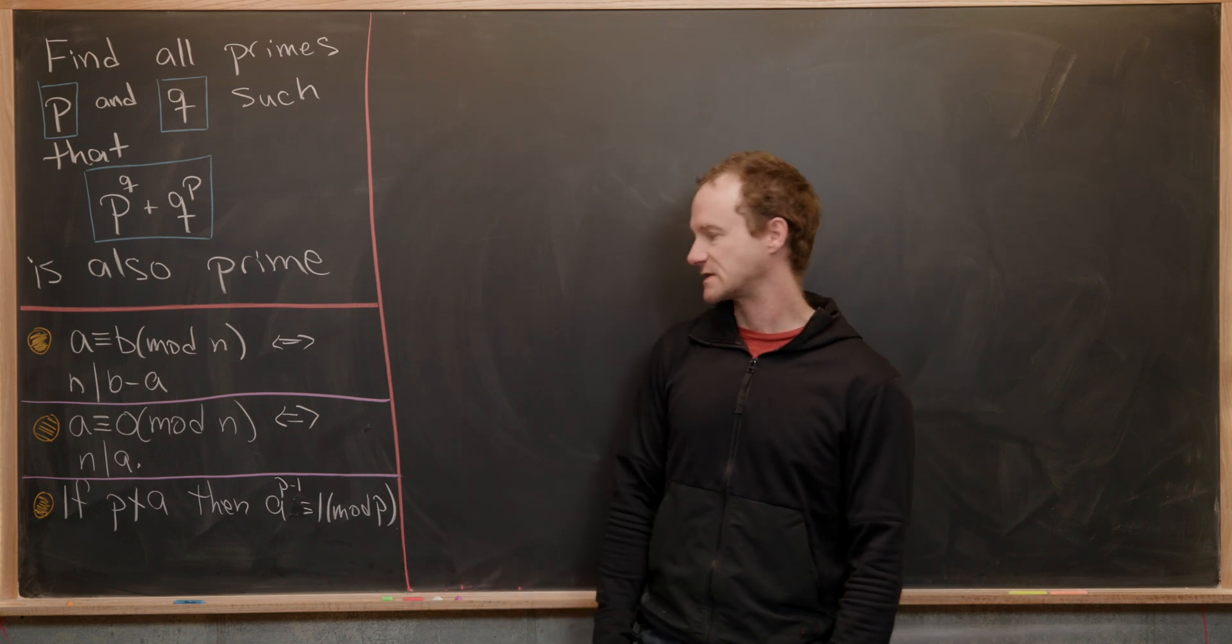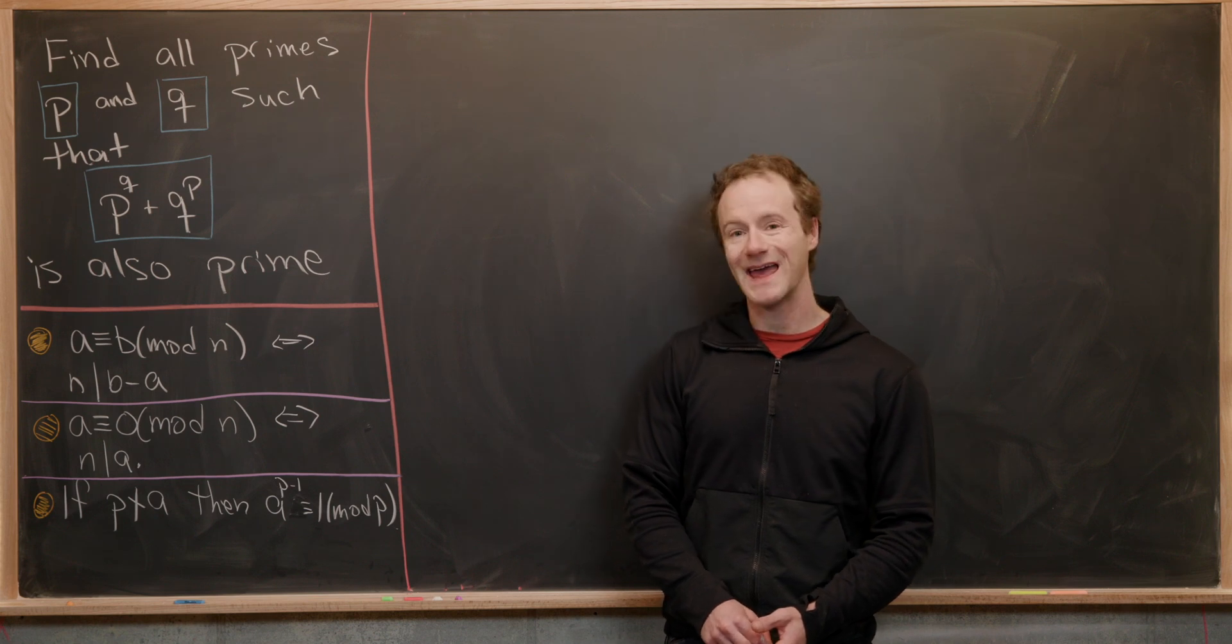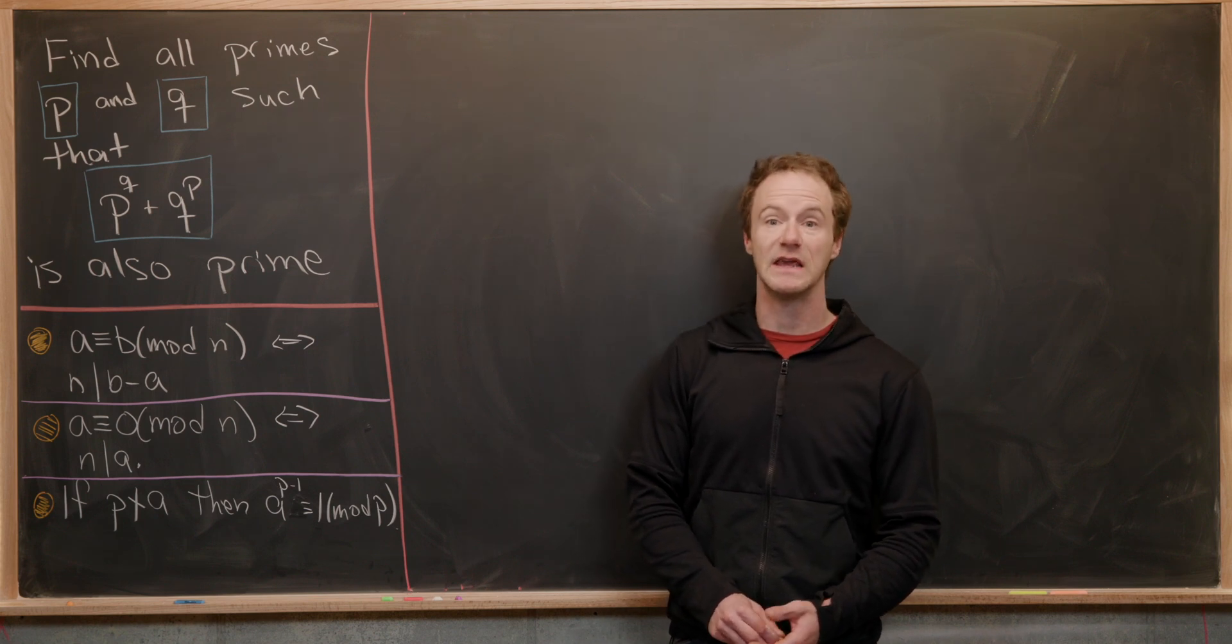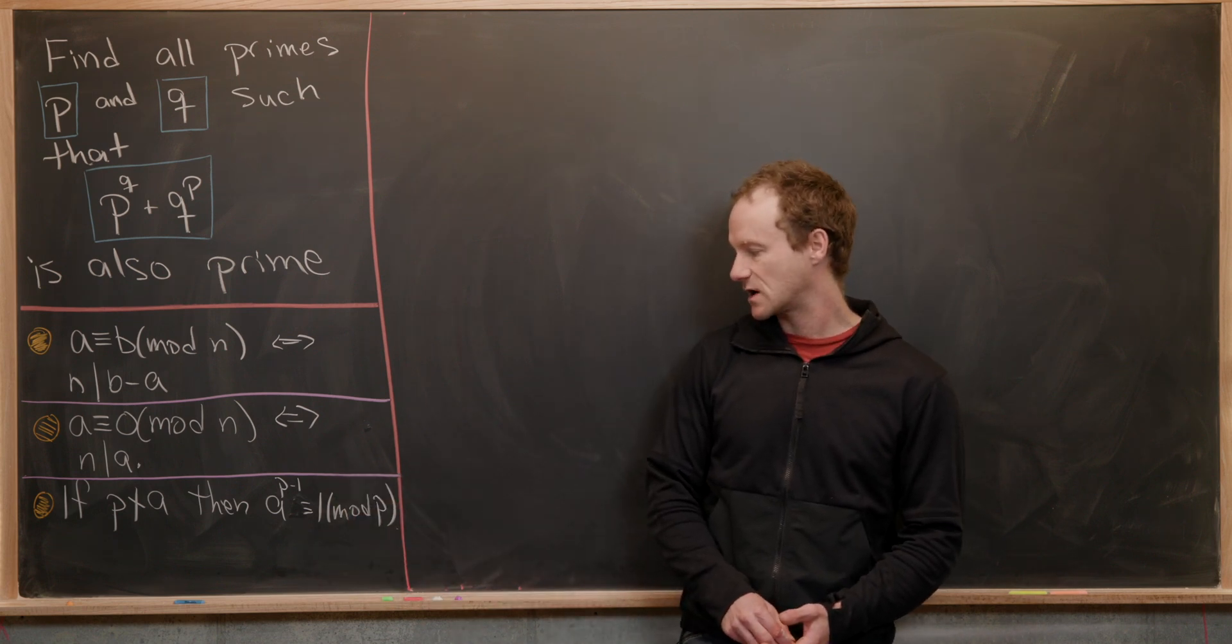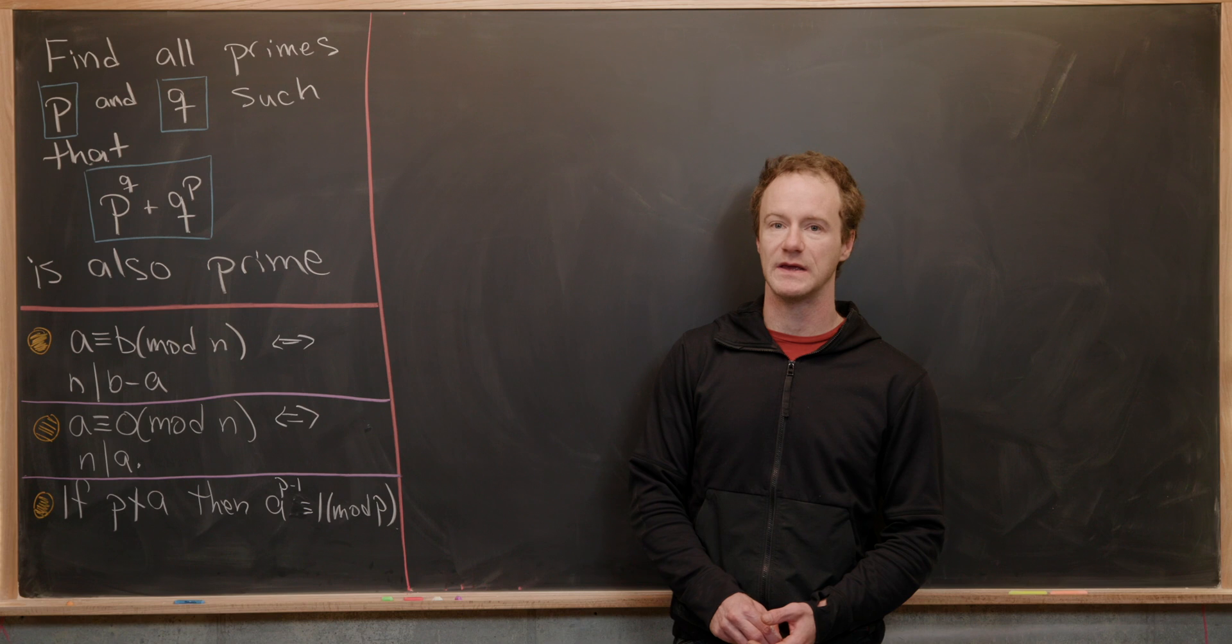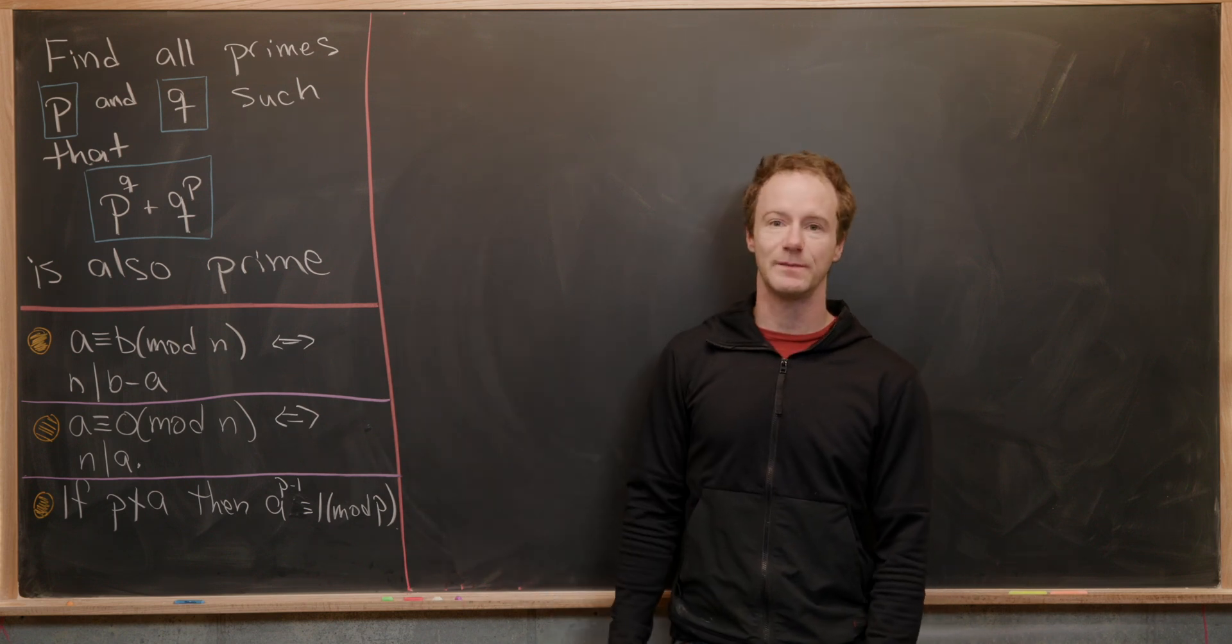Next, we've got Fermat's little theorem, which says that if p does not divide a, so in other words a is not a multiple of p where p is a prime, then a to the p minus one is congruent to one mod p. Now that we've got these tools ready, let's jump into our solution.